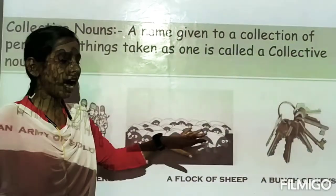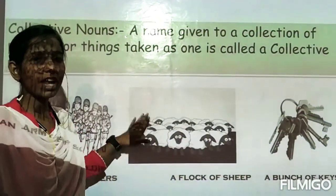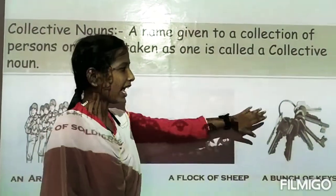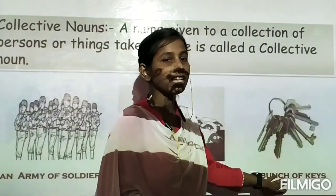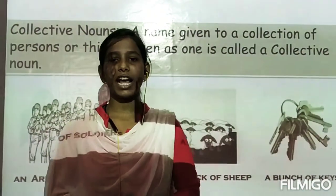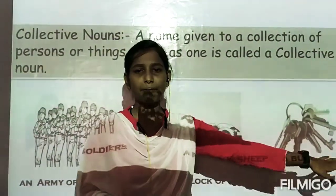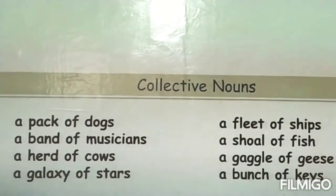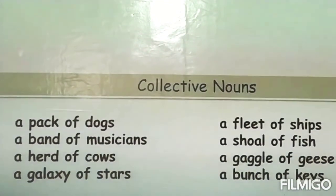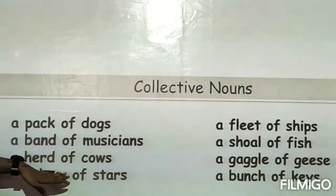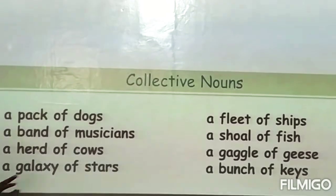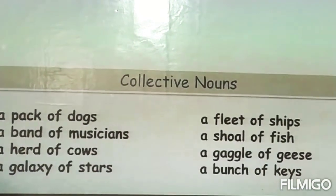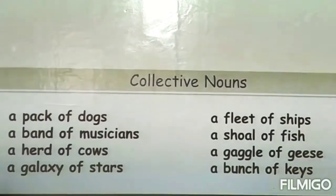More examples of collective nouns: a fleet of ships, a bunch of grapes, a pack of dogs, a band of musicians, a herd of cows, a galaxy of stars, a shoal of fish, and a gaggle of geese. You should memorize these examples and note them in your notebook.